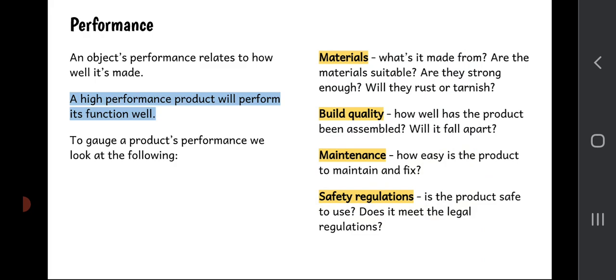But what makes a high performance product? Well, we're going to look at four different things: we're going to look at its materials, its build quality, maintenance, and safety regulations. And if an object, if a product, does these four things really quite well, then we can say it's high performance and therefore that it will perform its function well.